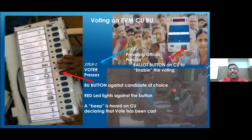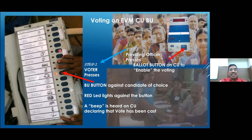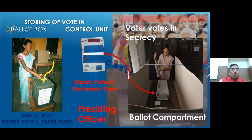When voting takes place, the first step is the voter approaching the presiding officer, who presses the ballot button on the control unit. This enables the ballot unit located in an isolated voter compartment. In step two, the voter presses one of the candidate buttons, the corresponding LED glows, and a beep is heard on the CU indicating the vote has been cast. The vote, previously stored in a ballot box, is now stored electronically in the control unit, which remains with the presiding officer.